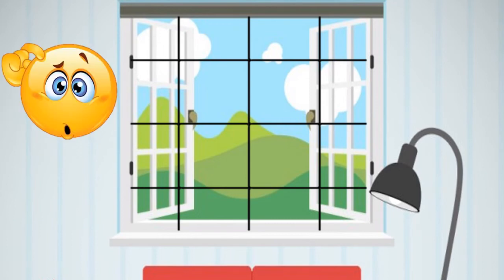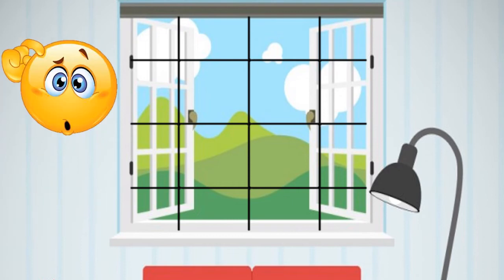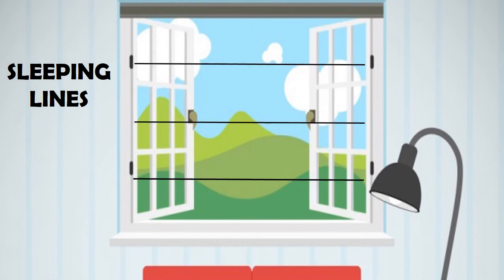Students, can you all tell me if the net has straight lines or curved lines? Yes, a net has straight lines. Which two types of straight lines do you see on the net? Yes, very good students. We see standing lines and sleeping lines.